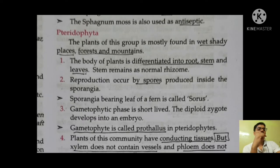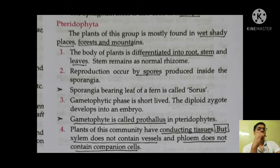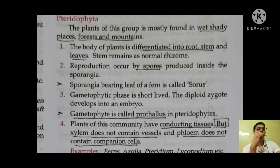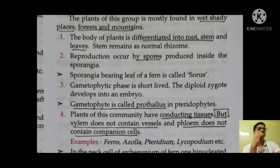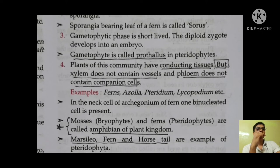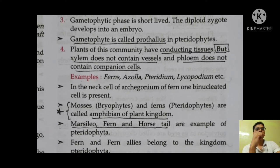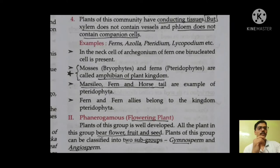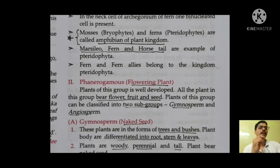Sphagnum moss is used as fuel and also as an antiseptic. The last group in cryptogams is pteridophyta. Plants of this group are mostly found in wet, shady places, forests, and mountains. The body of pteridophytes is divided into roots, stem, and leaves, and reproduction occurs by spores. Gametophyte is called prothallus in pteridophytes. Plants of this group have conducting tissue, but xylem does not contain vessels and phloem does not contain companion cells. Mosses from bryophytes and ferns from pteridophytes are called the amphibians of the plant kingdom. Marchanita, fern, and horsetail are examples of pteridophytes.